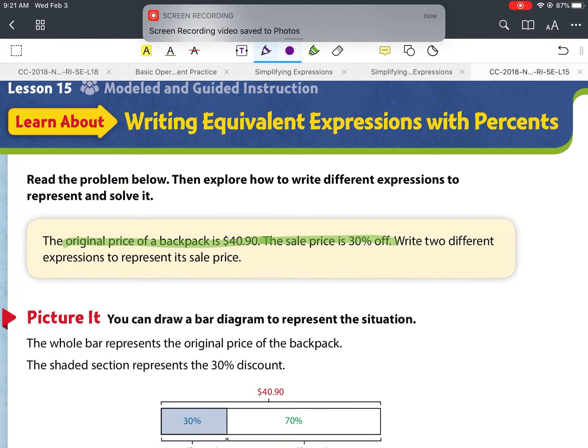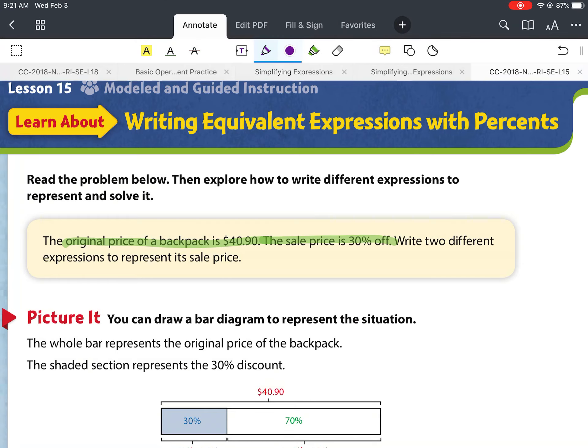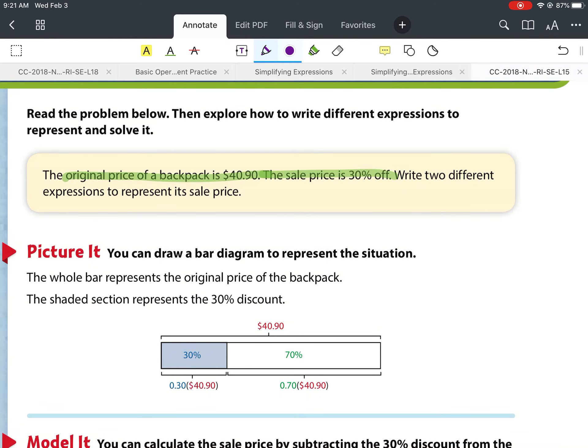And also, with this type of problem, it kind of goes back to our ratio and proportions unit when we were working with discounts, markups, and percents. So it's coming back in this unit as well. Here we have the whole bar represents the original price of the backpack. The shaded section represents the 30% discount. So we know that the original price is $40.90. They're running a sale that's 30% off. So that's what the shaded section is.